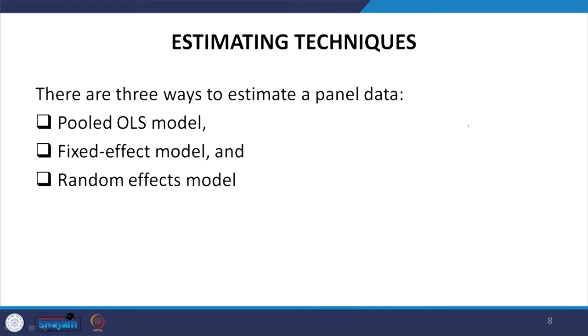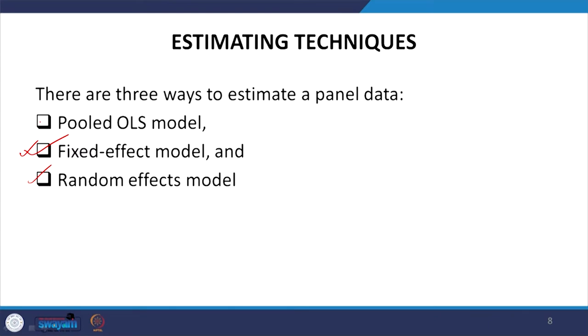There are broadly three estimation techniques discussed in panel data. One is called the pooled OLS model, the second is fixed effect, and the third is random effect model. Fixed effect is used most largely, but we will also discuss the pooled OLS model. Panel data methods can be divided into two broad categories: homogenous panel data models and heterogeneous panel data models.